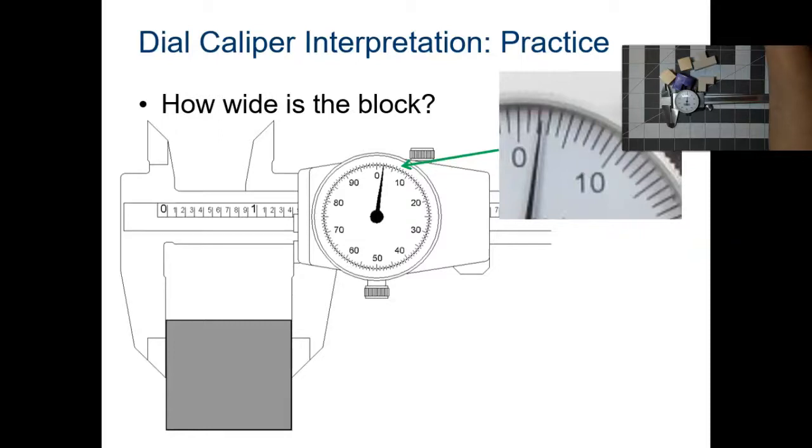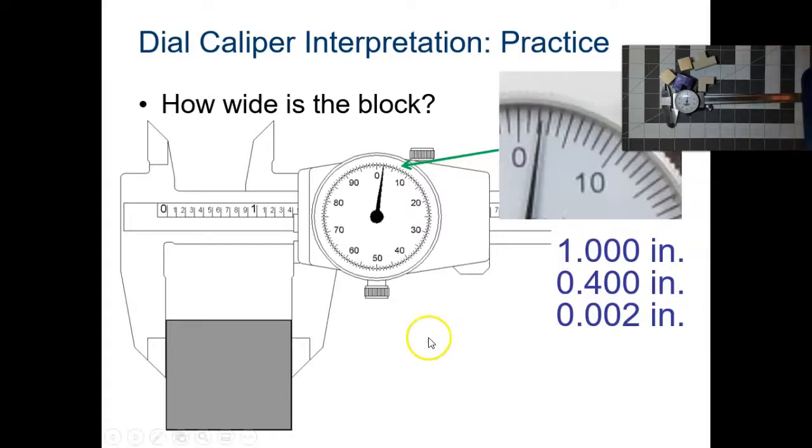So let's look at this block. How wide is the block? It's past the one inch mark. It's past the four on the blade itself. And then the dial is reading 0.002. If you look really closely at that, you would count this. You would go one, two. And since it's before the ten here, it's going to be 0.002.